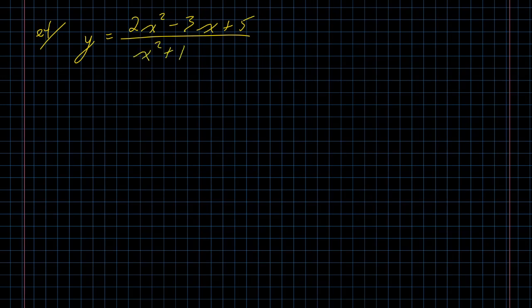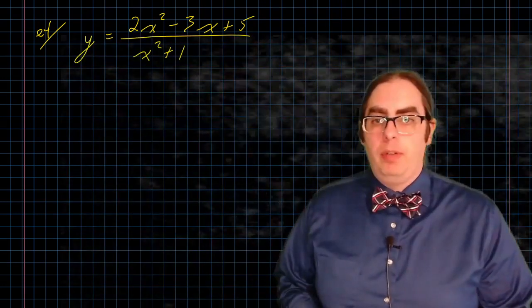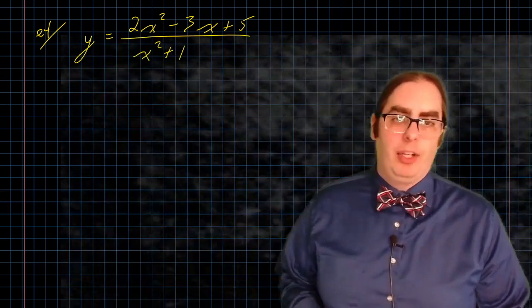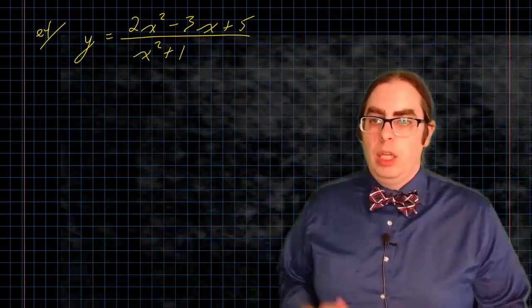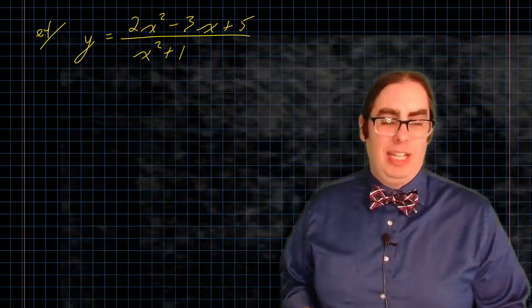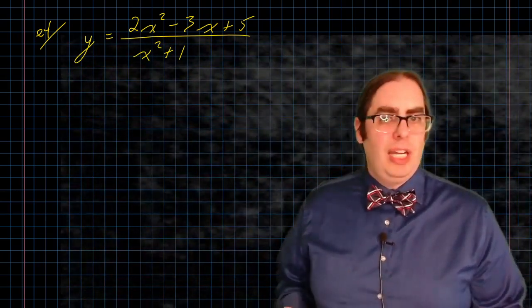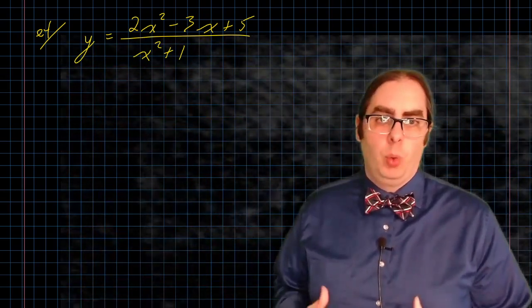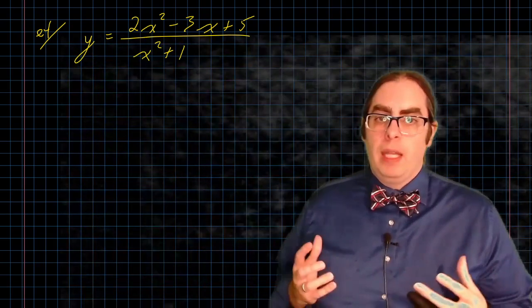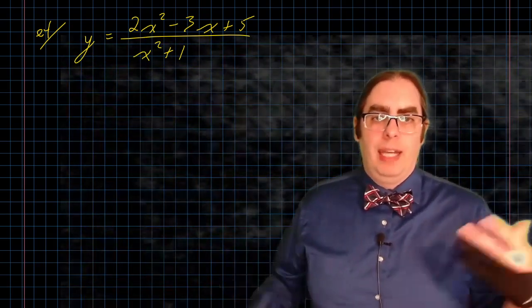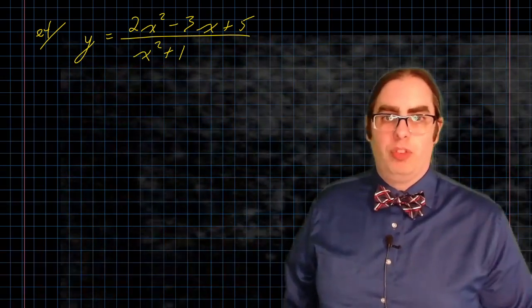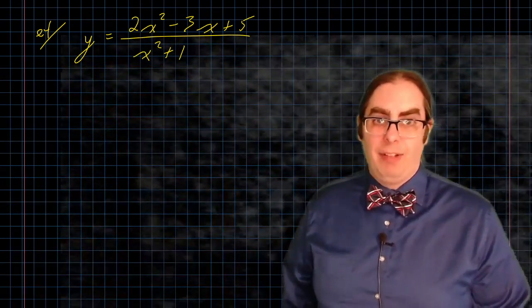I'd like you to take a look at the function y equals 2x squared minus 3x plus 5, all over x squared plus 1. You could probably figure out a rough graph using intercepts and asymptotes from a previous course, but use the same language along with the ideas of extrema we've been discussing to take it one step further. Find all of those things, use them to draw the graph, and if you'd like, go into Desmos or similar software to verify your results. See what you can do with this function, and I'll see you in the next video.